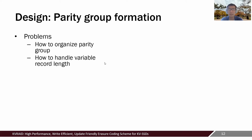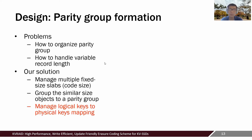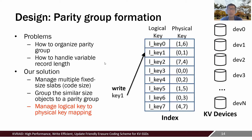Now let's dive into the key designs. The first problem is parity group formation: how to organize parity groups and keep track of membership information, and how to handle variable record sizes. In our solution, we pre-define fixed coding sizes called slabs, and group similar-sized records together to form a parity group. To track parity group membership, we translate logical keys to physical keys, allowing us to easily track membership information from any record in a parity group while keeping the group dense. When a write request comes, we assign a physical key and group records of similar size into a parity group based on request order.